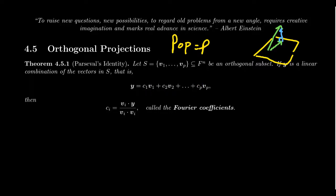So Y equals C1 V1 plus C2 V2 plus C3 V3, all the way up to CP VP. So in other words, Y is contained inside the span of this set of vectors, S, right here.